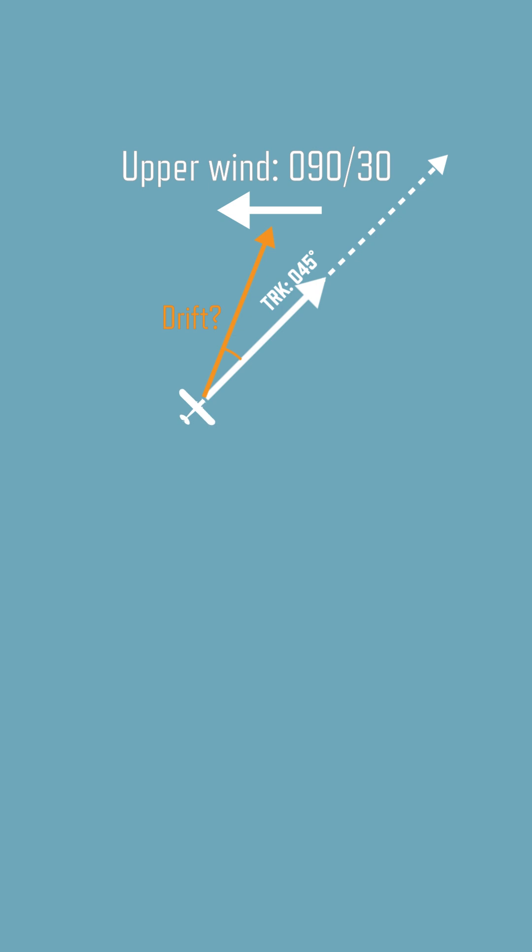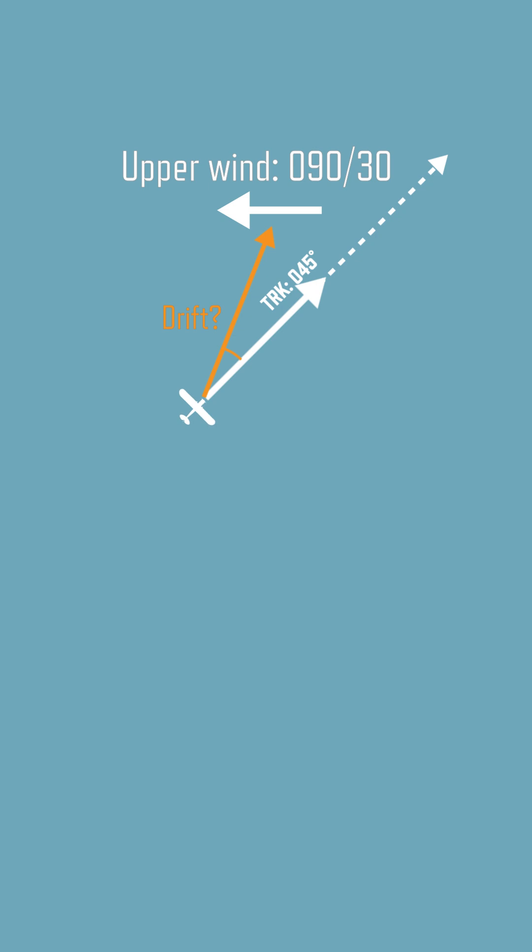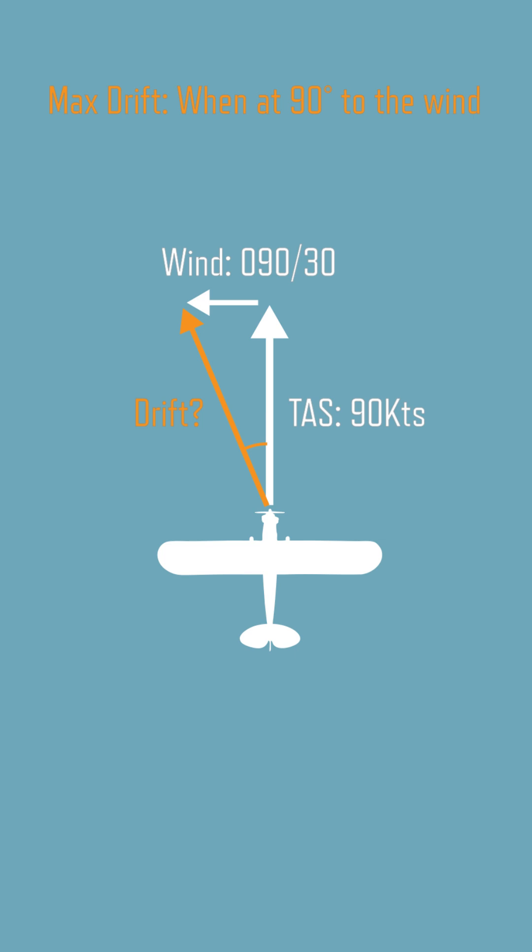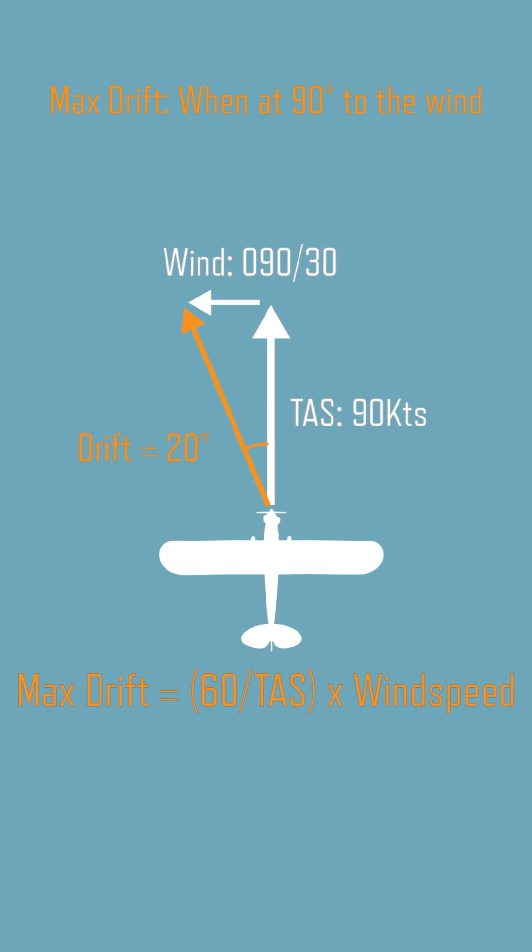Next, we need to calculate the drift on the track. Start by calculating the max drift, the drift you would experience if your heading was 90 degrees to the wind. This is equal to 60 divided by your true airspeed, multiplied by the windspeed. Here, 60 divided by 90 multiplied by 30 equals 20 degrees max drift.